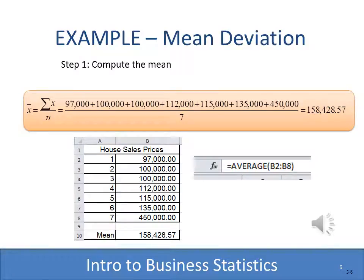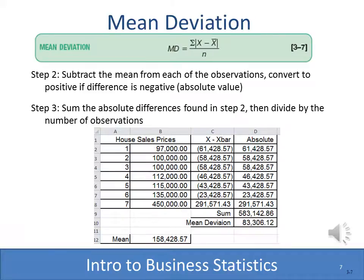Now we're going to step through computing the mean deviation. The first step is to compute the mean — you sum up all the values and divide by the number. You can see the formula written out longhand, and of course the Excel shortcut using the average function. With the house selling prices, I've created a column in which I subtract x minus x-bar, which is the first step. Then in column D, I've created the absolute value, because that's what the formula calls for. I've summed that up, divided it by n, and we end up with a mean deviation of $83,306.12.